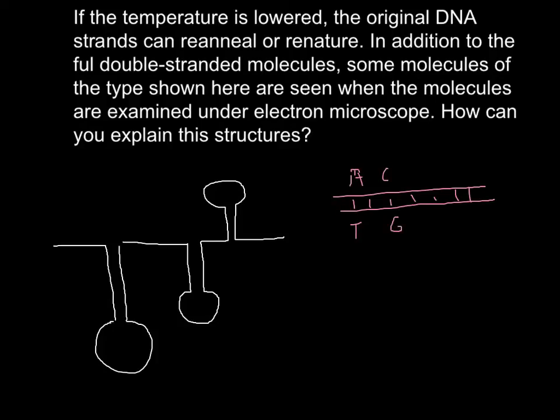So if we separate these two strands, for example applying heat like in PCR, we can get two single-stranded DNA. And how structures like here on the left can happen? It's just because of the same rule of the complementary bases.